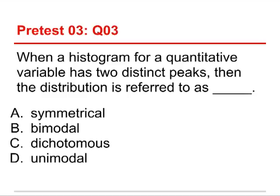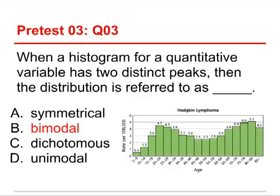When a histogram for a quantitative variable has two distinct peaks, then the distribution is referred to as symmetrical, bimodal, dichotomous, or unimodal. The answer is bimodal. Here's an example: this is a histogram of age broken into five-year categories. We have a peak in the early 20s and a peak in the early 80s. Bi means two, mode means the most common categories — bimodal means two peaks, or two most common scores or bins.